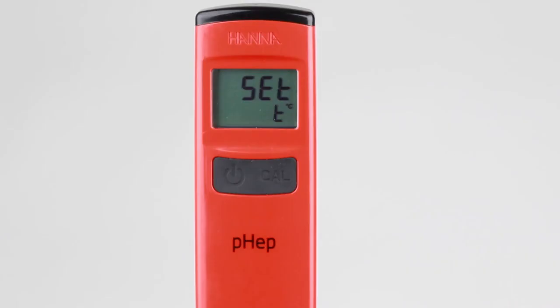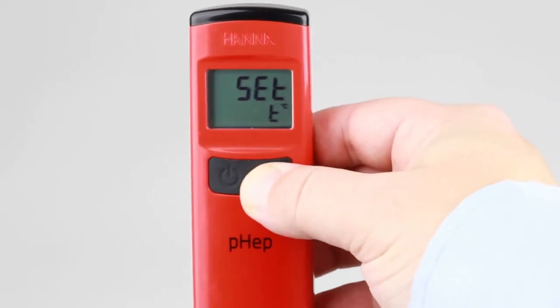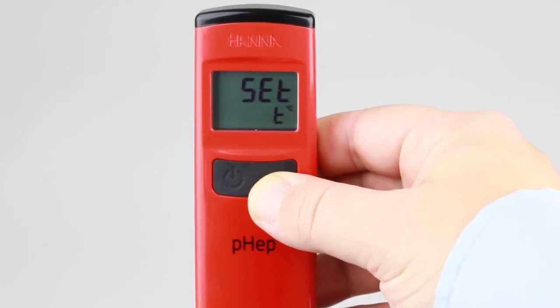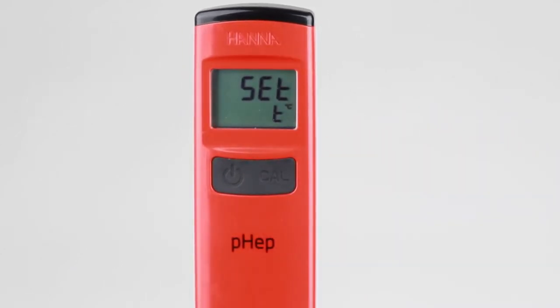The first setting displayed is a selection for temperature unit. At default, the temperature measurement unit is degrees Celsius. Pressing the Cal button changes the displayed unit to degrees Fahrenheit. Pressing the Cal button again changes it back to degrees Celsius.